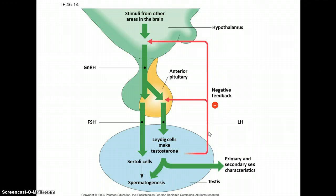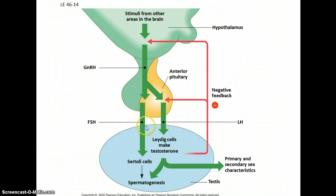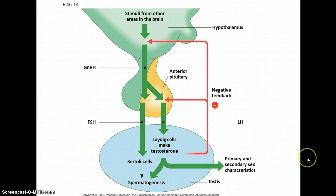The male cycle is a bit simpler. The same hormones are involved — gonadotropin-releasing hormone, FSH, and LH — but here they promote the production of sperm cells and testosterone, leading to secondary sex characteristics. There's really no cycle; it's just happening continuously from when a male reaches puberty up until advanced age.